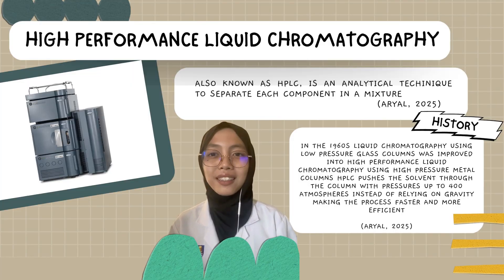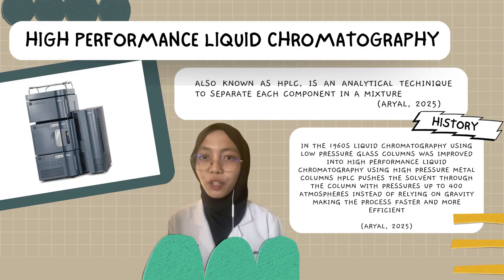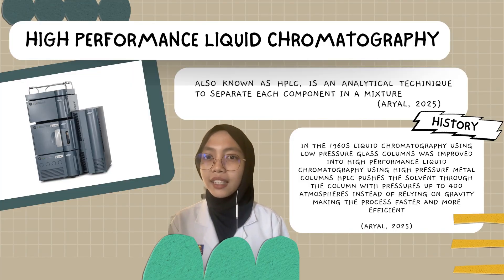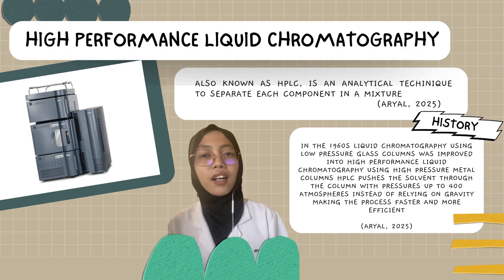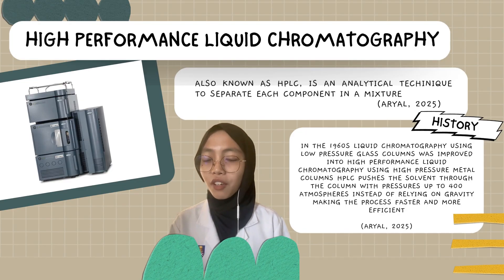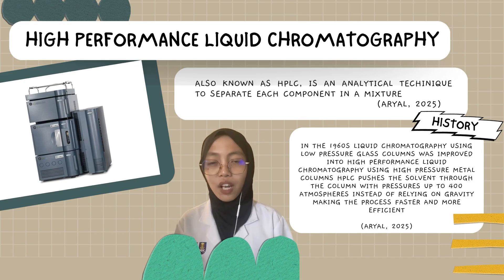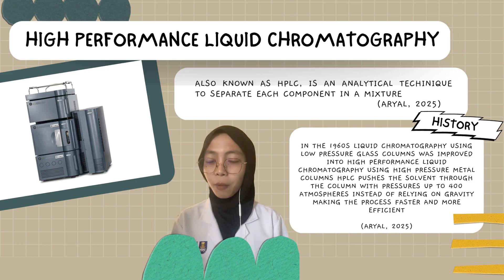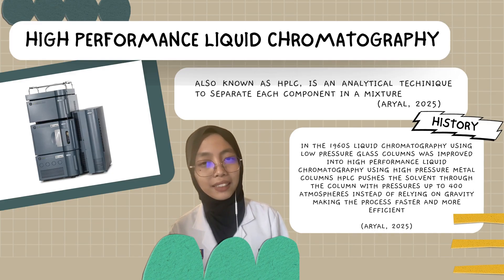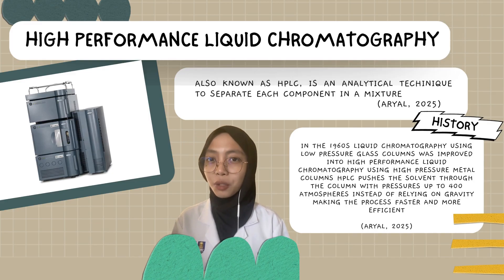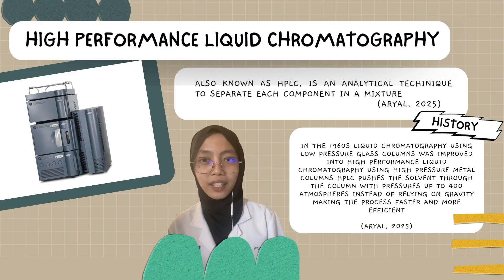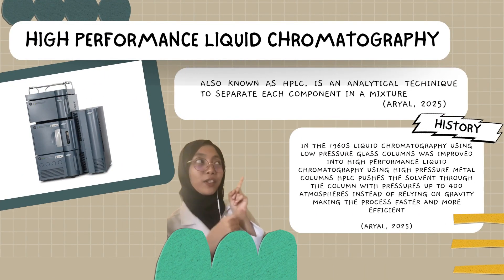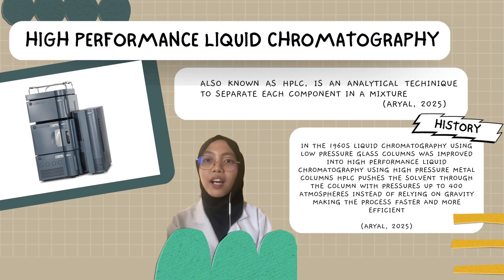When it comes to analysing drugs, scientists typically use two different methods: gas chromatography mass spectrometry, GC-MS, and high-performance liquid chromatography, HPLC. We are going to focus on HPLC, which is an analytical technique used to separate each component in a mixture. Here is a short history about high-performance liquid chromatography.